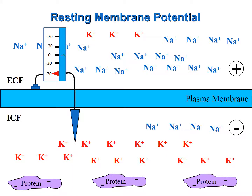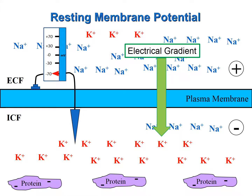In fact, if you were to measure voltage across the plasma membrane using a voltmeter, it would measure about negative 70 millivolts. A volt is a measure of the tendency of charged particles to flow. Negative voltage indicates that the intracellular fluid is more negative compared to the extracellular fluid. So when a membrane is at its resting membrane potential, there is an electrical gradient of negative 70 millivolts that potentially can pull positively charged ions from the extracellular fluid across the plasma membrane into the intracellular fluid.